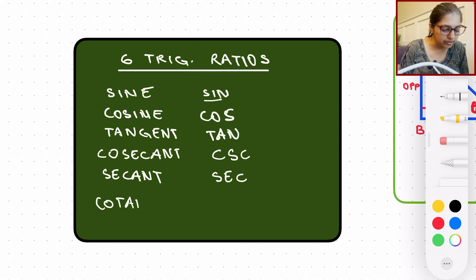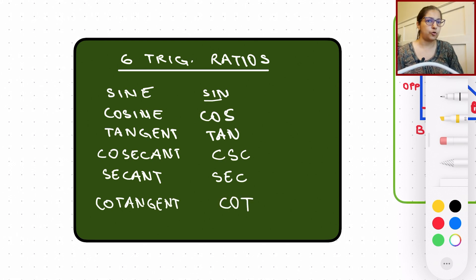and cotangent, which is written as simply cot as a short form. So here are the six trigonometric ratios that basically define a lot of applications that we utilize in our real life on a day-to-day basis.